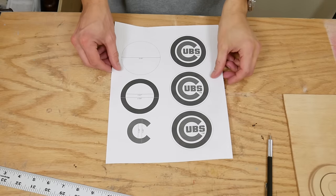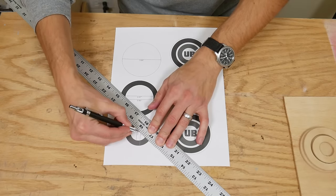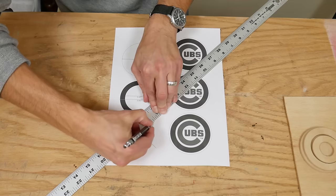I made a template on the computer and marked where I needed to cut on the smallest circle to make the big letter C.